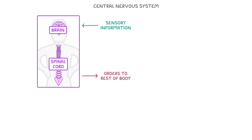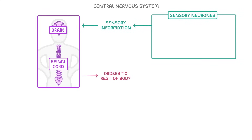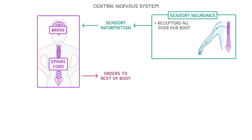To do this, the CNS needs information about what's happening in the rest of the body, which it receives through sensory neurons. These carry information from receptors all over our body to the central nervous system — so this could be information about changes in temperature, or about the level of carbon dioxide in our bloodstream.